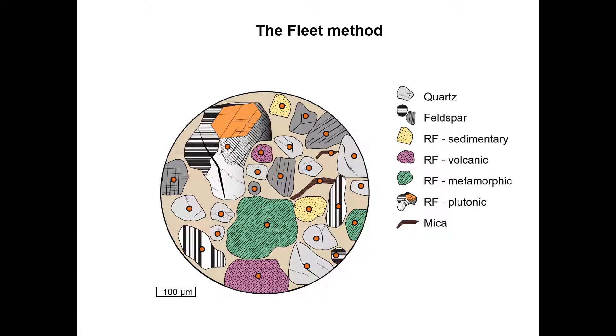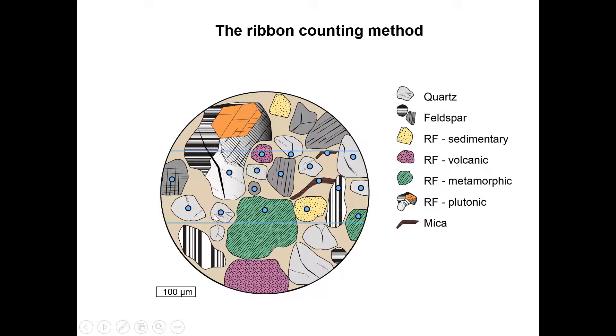A variation of the fleet method is the so-called ribbon counting method. Here you count all grains that are contained within a small band, the ribbon, of the thin section. The width of this ribbon depends on the grain size of the sample.